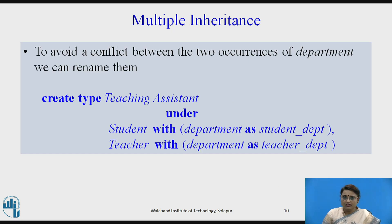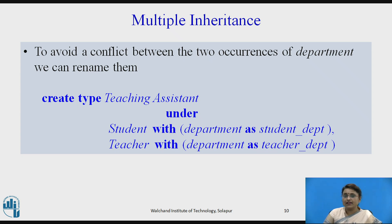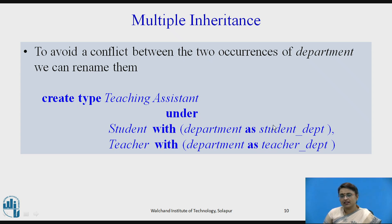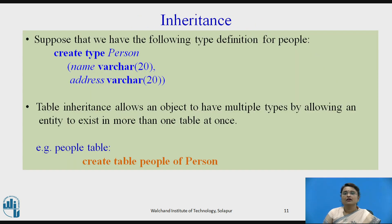Now there is a conflict with the attribute name 'department' because two occurrences of department will appear — one from student and one from teacher. To remove this conflict, we write: create type TeachingAssistant under Student where the department of student is renamed as student_department, and the department of teacher is renamed as teacher_department. This way the two department attributes are not conflicting and will appear as student_department and teacher_department.